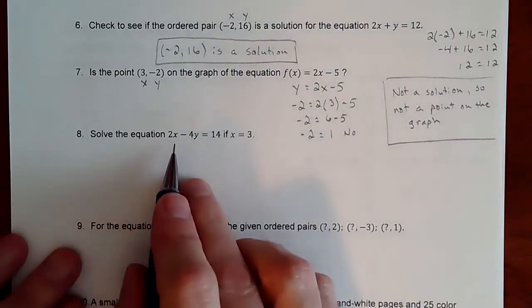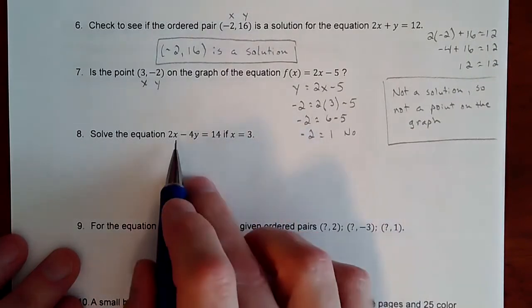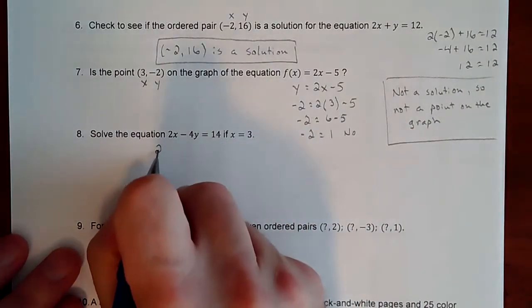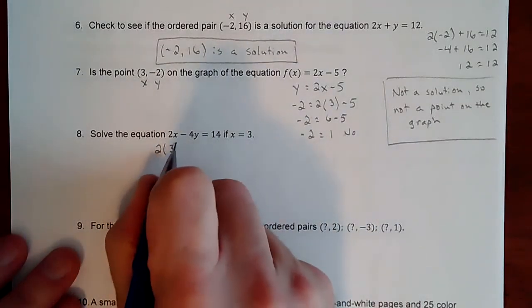So here we're going to solve this equation where they give you an x value, figure out the y value. So we're just going to substitute that in. So we're going to take 2, replace the x with the 3 that they give us, figure out the y that goes with it.